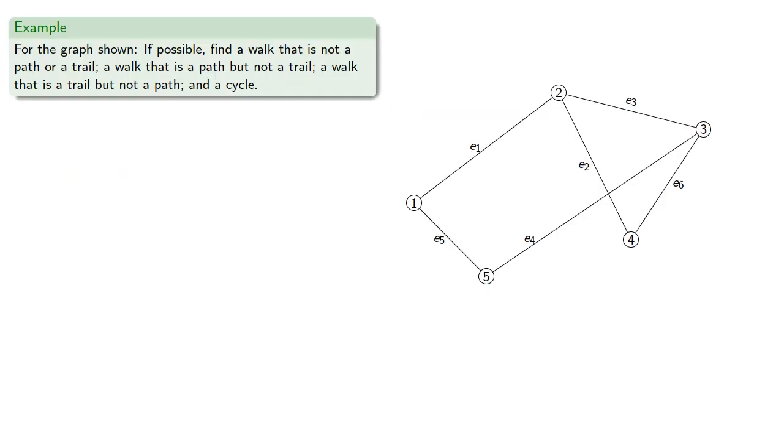For example, let's consider a graph. If possible, let's find a walk that is not a path or a trail, a walk that is a path but not a trail, a walk that is a trail but not a path, and a cycle.